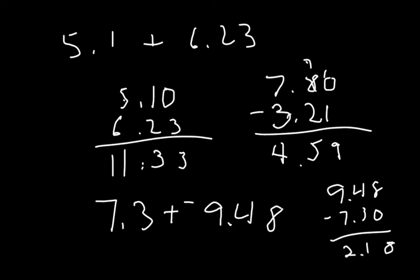So, 8, 1, 2. And there's more negatives. More negatives. Negative 9 compared to positive 7. So, the answer would be negative 2.18.